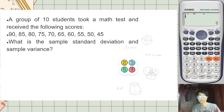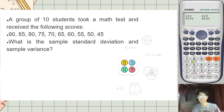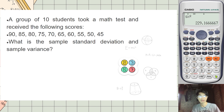For the sample standard deviation, press Shift 1, go to 4-Var, then select sx. That is the sample standard deviation. The answer is 15.13. For the sample variance, simply square that value to get the sample variance.